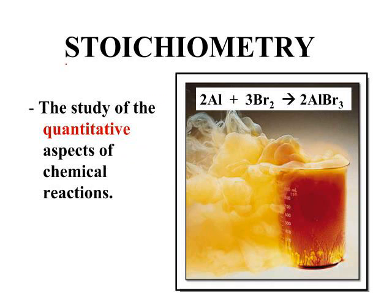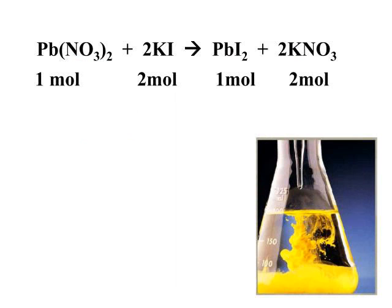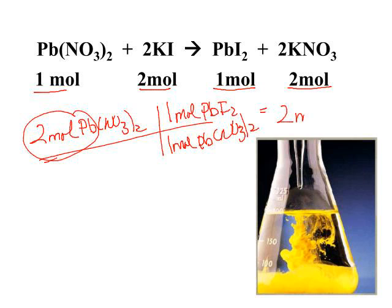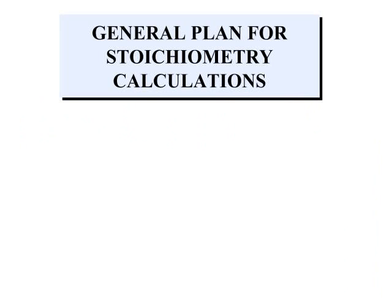Let's continue our study of stoichiometry, the quantitative aspects of chemical reactions. You saw in the previous podcast that the balanced equation represents moles of reactants and products, and you can take moles of any reactant or product — in this case lead nitrate — and solve for any product or reactant. One mole of lead nitrate produces one mole of lead(II) iodide, and two moles of lead(II) nitrate produces two moles of lead(II) iodide. But we often don't want to solve just from moles to moles.